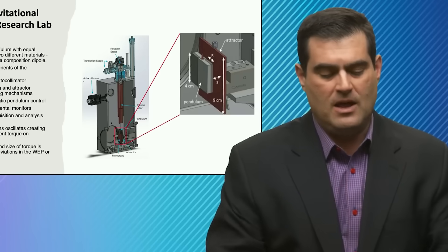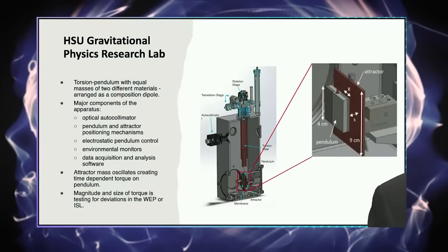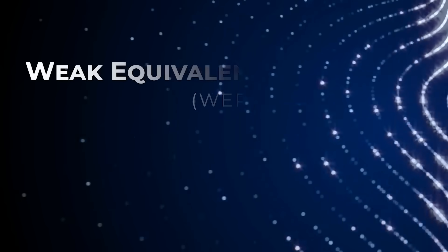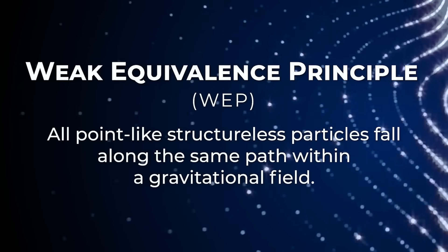Then you measure the period of the pendulum, the size of its oscillation as a function of the separation between the attractor mass and the pendulum mass itself. This allows you to look for deviations in what's called the weak equivalence principle or in the inverse square law.